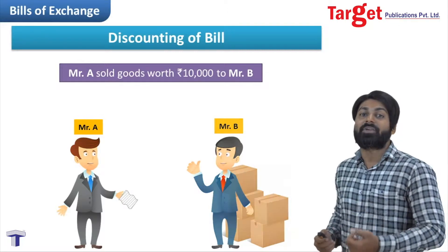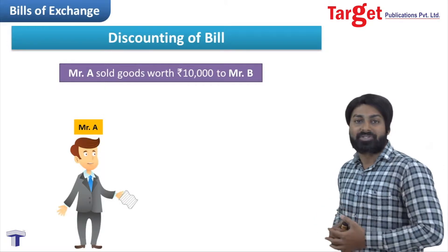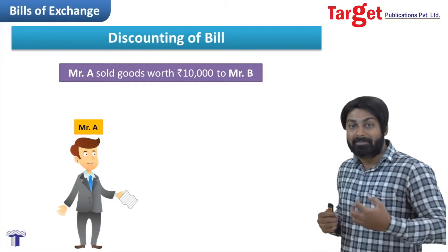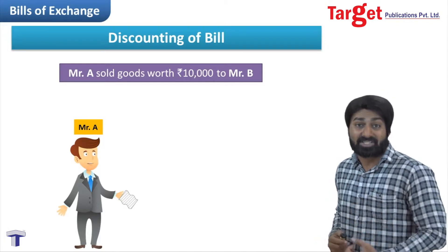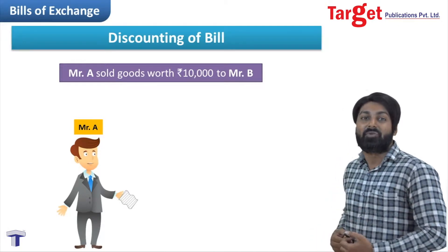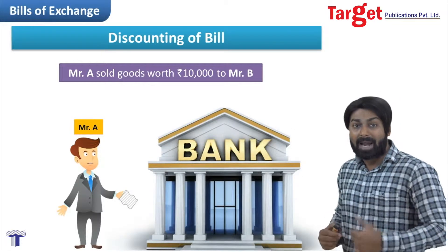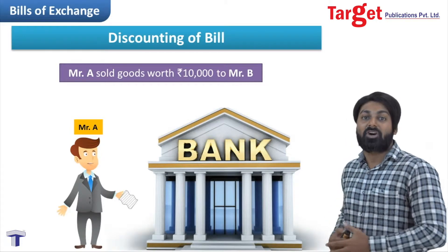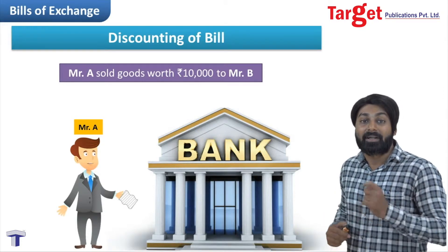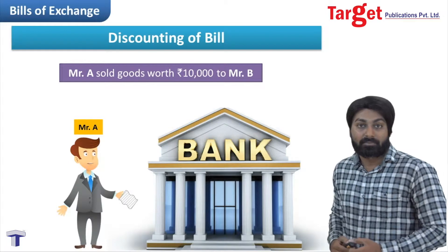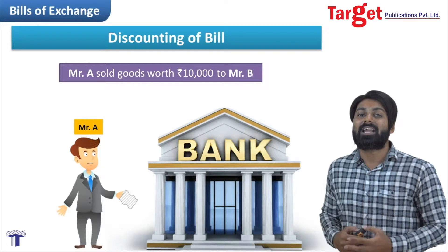Now Mr. A has an option to keep that bill with himself for three months and go to Mr. B after three months. But Mr. A is in need of cash — he needs money urgently right now. So what Mr. A can do is go to the bank and ask for money. Of course the bank will make the payment, but the bank will not make the entire payment.